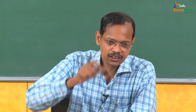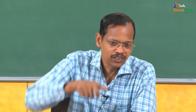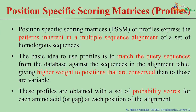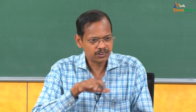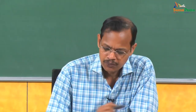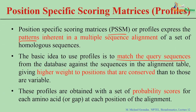How do you use the alignment for conservation? You find the residues that occur at the same position in different sequences, and based on that you calculate the conservation score to see which residues are conserved. Here the PSSM — the Position Specific Scoring Matrix — provides patterns inherent in multiple sequence alignment of homologous sequences.